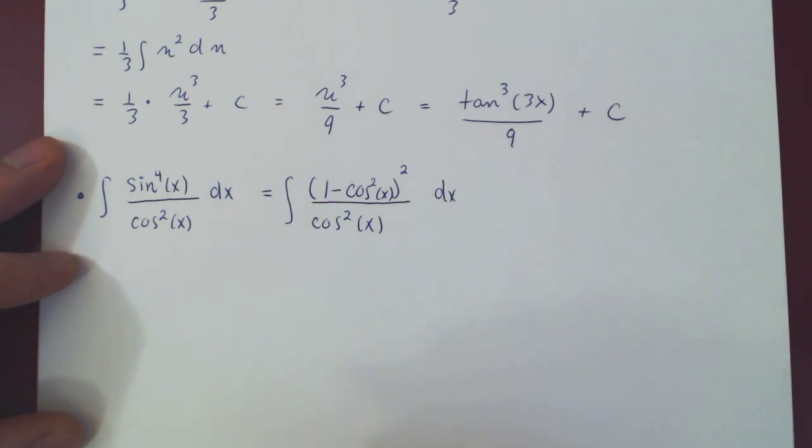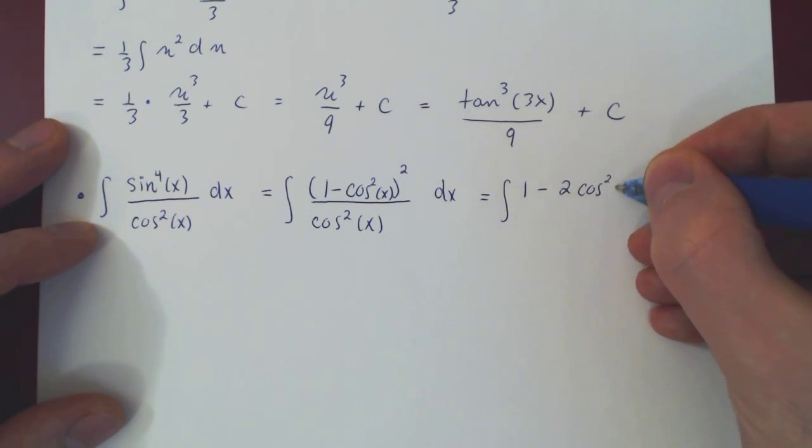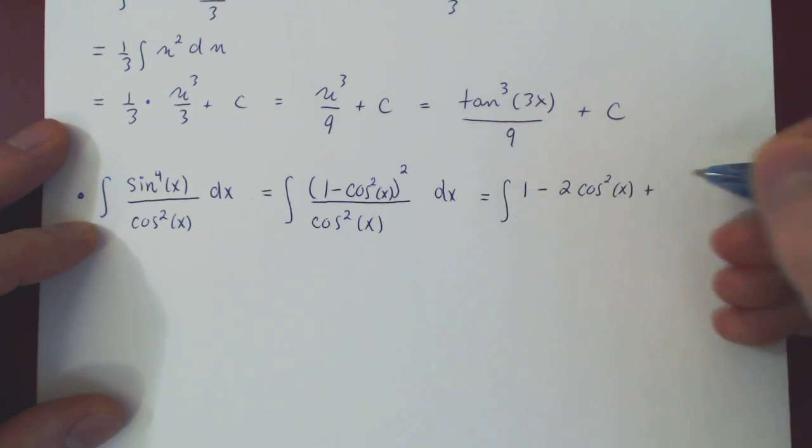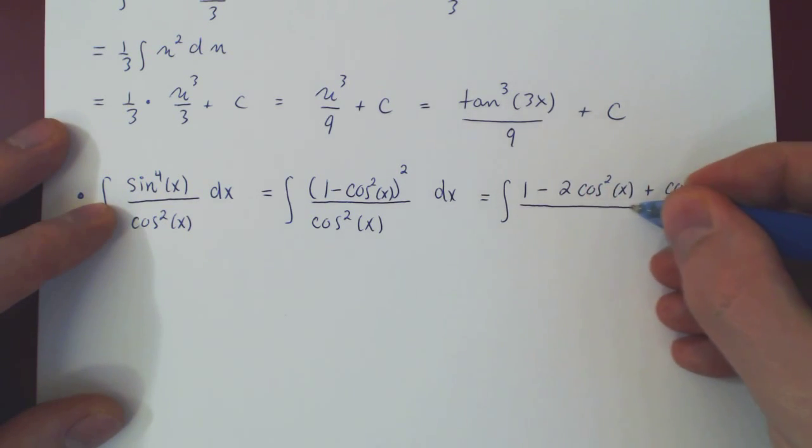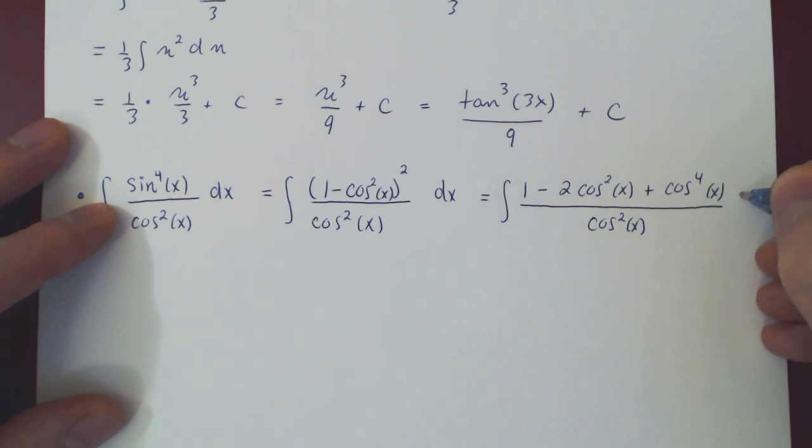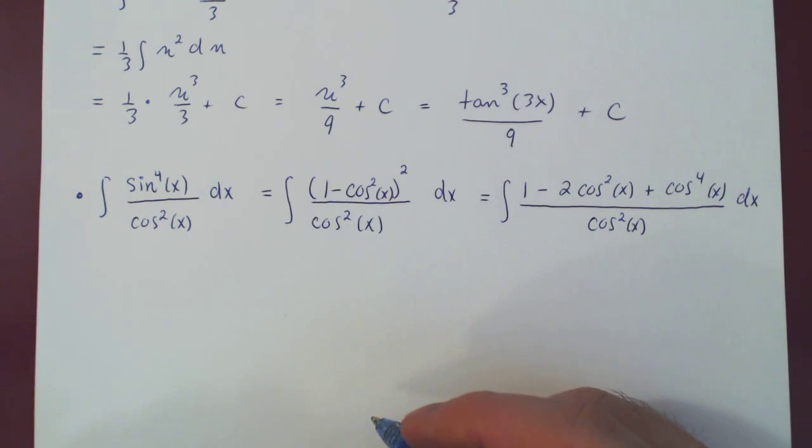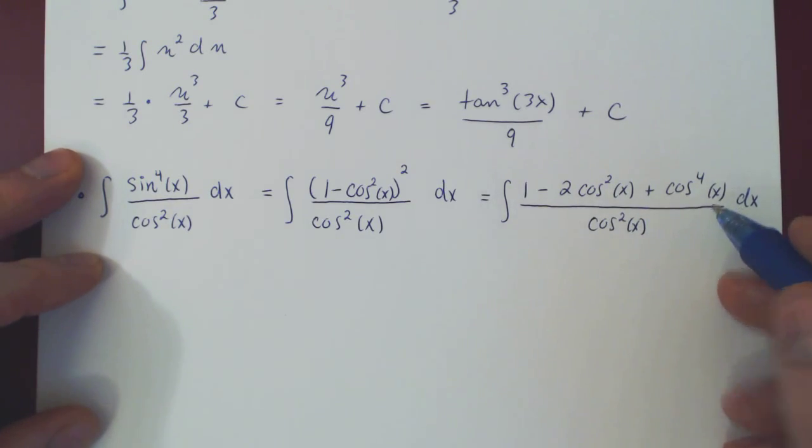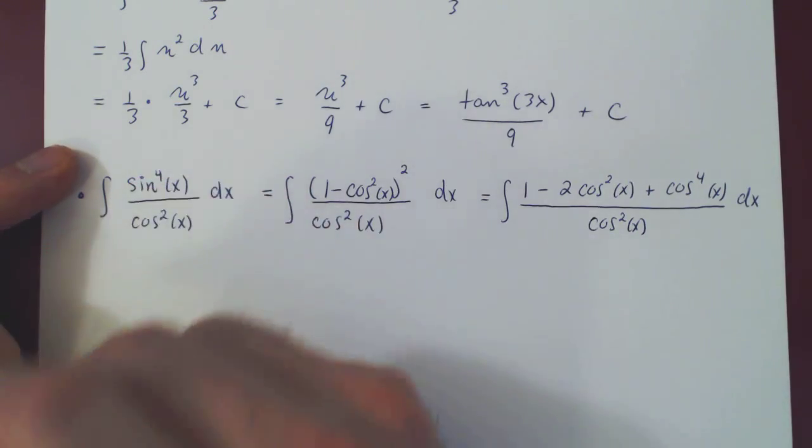Let me square the numerator, which will give us 1 minus 2 cos squared of x, plus cos to the 4 of x, and this is of course all over cos squared. Now this may not look good, but if you divide through each term by cos squared, you'll find something quite interesting.